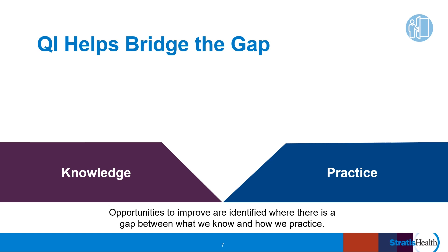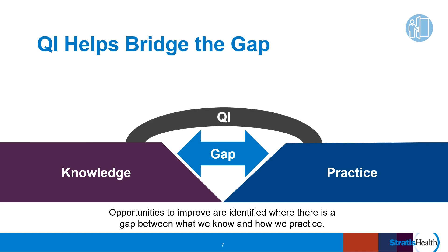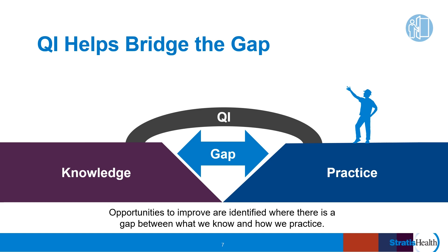Here you can see a representation of the care gap we are aiming to close with quality improvement science, culture, and tools. We identify opportunities for improvement where there is a gap between what we know from research and best practices and how we actually deliver care. In healthcare, we are continually learning new and better ways to improve health, yet there is almost always a delay in translating that knowledge into practice. Closing that gap is an essential role of quality improvement.